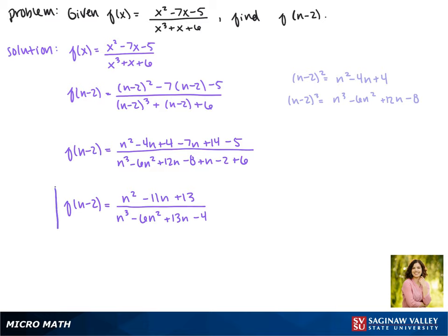So all together, f of n minus 2 equals n squared minus 11n plus 13, all over n cubed minus 6n squared plus 13n minus 4. And this is our final answer.